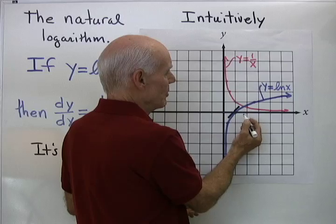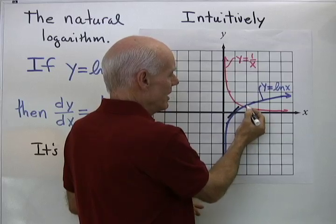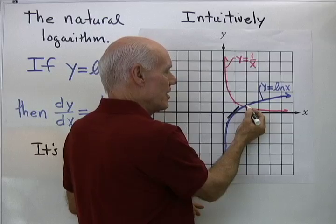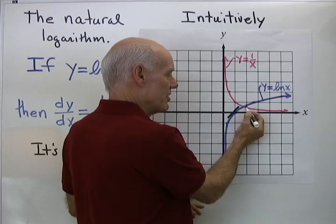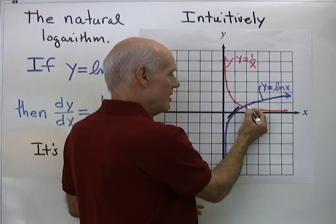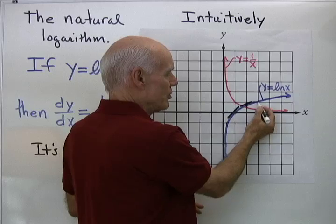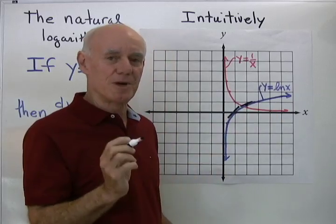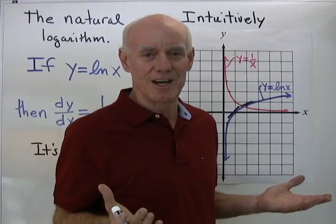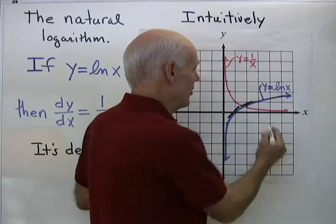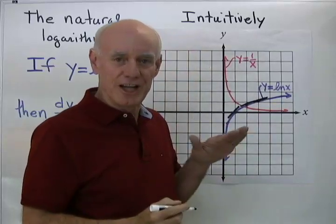If I go to x = 2 on the blue graph and want to know the derivative, I go to the red graph and that y-coordinate is 1/2. So at that point I draw in a line with slope about 1/2. Over at x = 3, I go to the red graph and read 1/3, so at that point the tangent line should be even a little less steep.